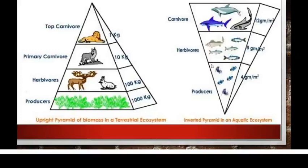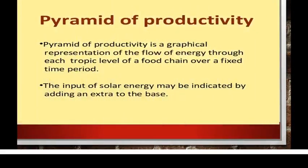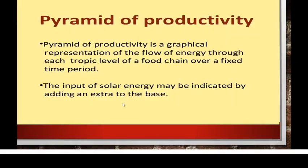The third type is the pyramid of productivity, also called the pyramid of energy. Here, the pyramid is constructed on the basis of the amount of energy fixed at each trophic level. It is a graphical representation of the flow of energy through each trophic level of a food chain over a fixed period of time. The input of solar energy may be indicated by adding an extra block to the base, since plants capture solar energy and energy is greater at the producer level.